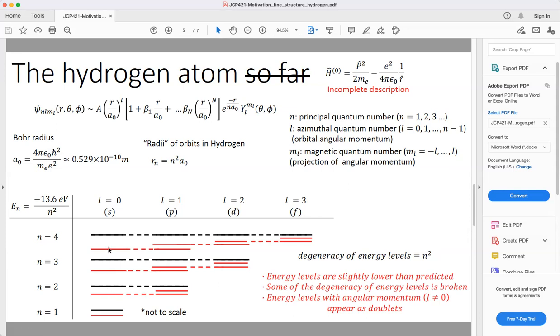In particular, all of the energy levels are a little bit lower than predicted, and some of the degeneracy is lifted. For energy levels with angular momentum—when l is not equal to zero—the energy levels appear as doublets. You would see them as two spectral lines experimentally. This suggests that the spectrum of the hydrogen atom isn't as degenerate as our solution to the Schrödinger equation would have led us to believe.